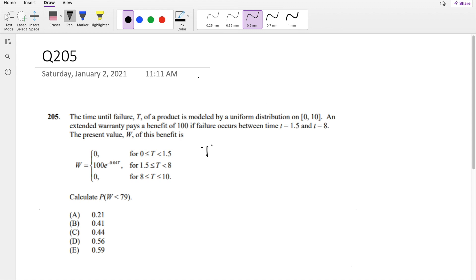T is modeled by a uniform distribution from 0 to 10. An extended warranty pays a benefit of 100 if a failure occurs between T equals 1.5 and T equals 8. So here, W, this benefit, is modeled by this expression right here.